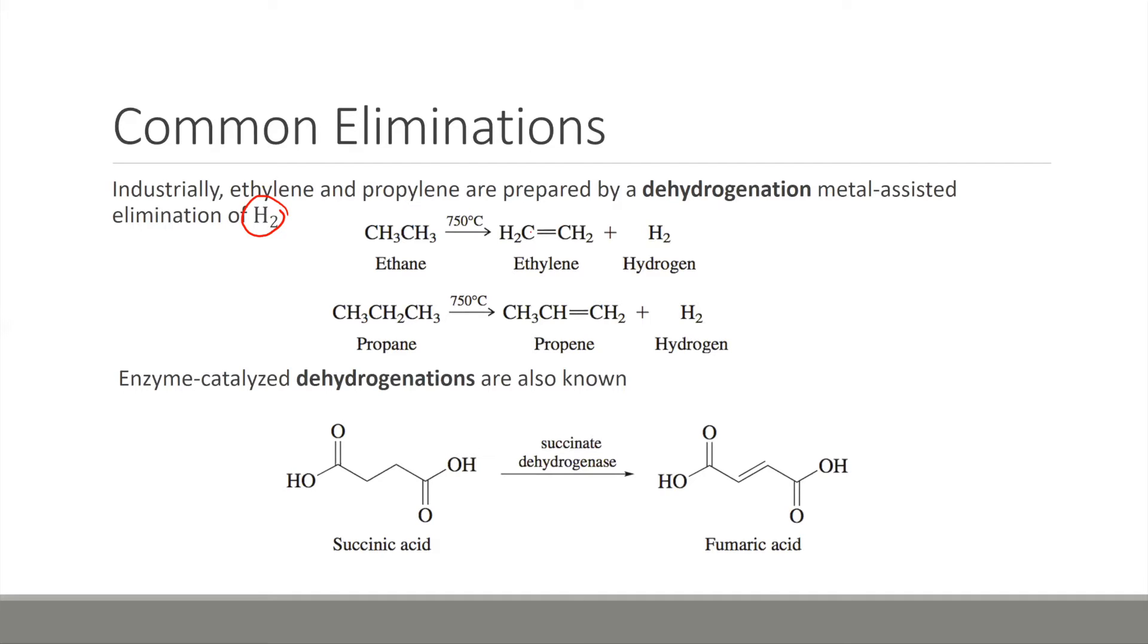This is common also in biological systems. So enzyme-catalyzed dehydrogenations are known. Here's one common one. This actually happens in the citric acid cycle. You'll see the citric acid cycle brought up in biochemistry a lot.